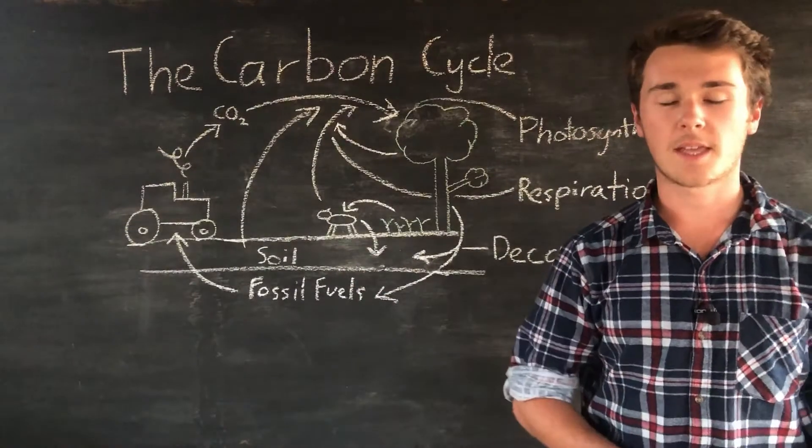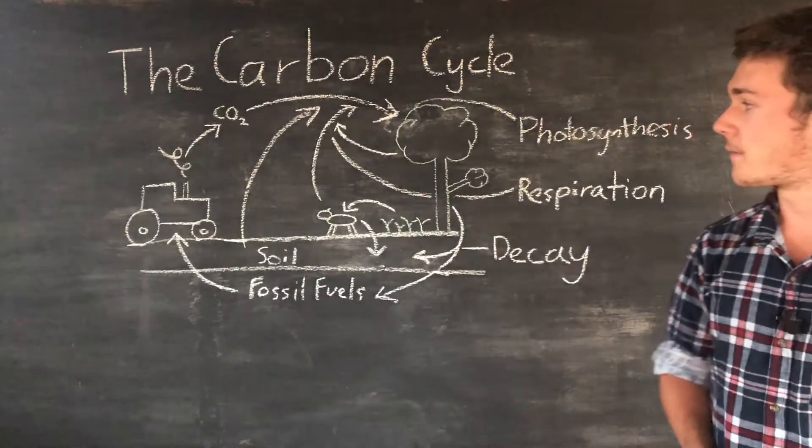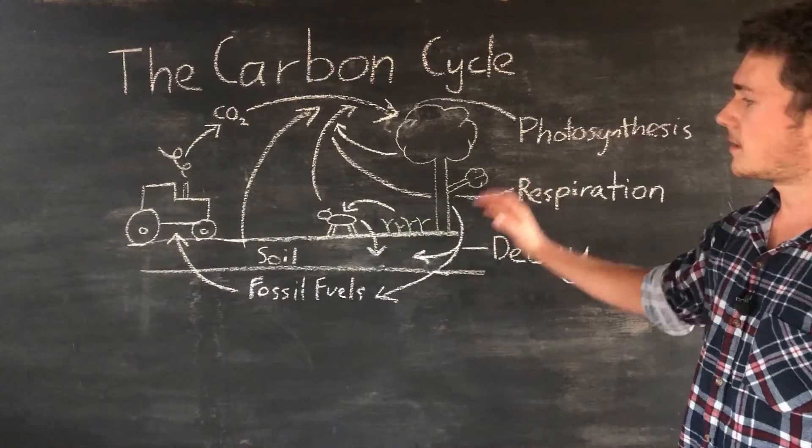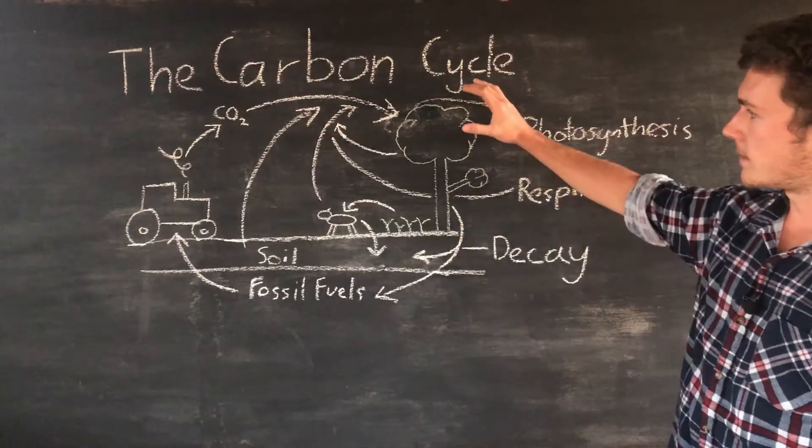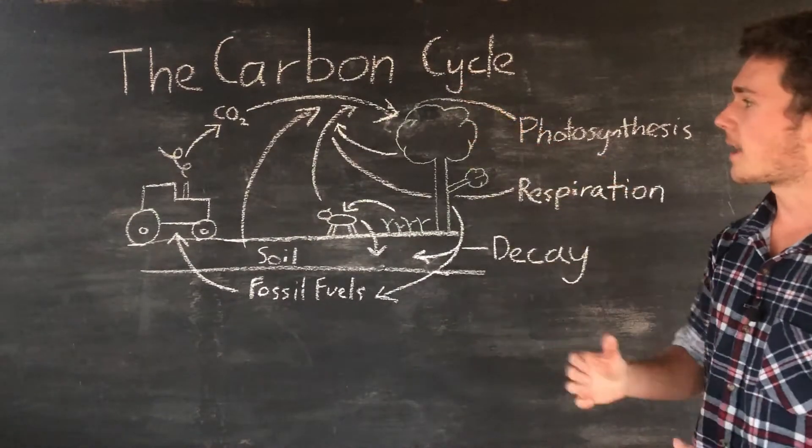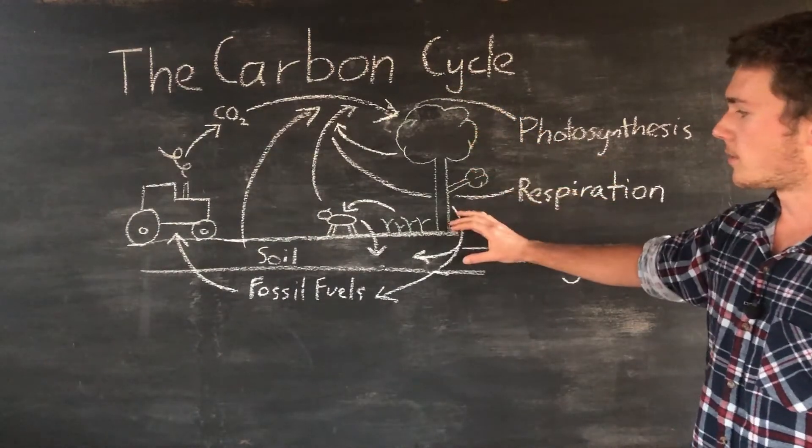This is a basic diagram of the carbon cycle but for agricultural purposes this is probably all we need to know. The most important part is that plants draw out carbon dioxide and then we can use it.